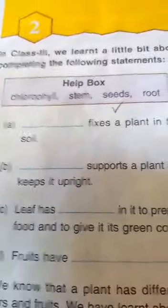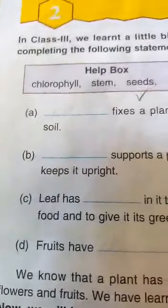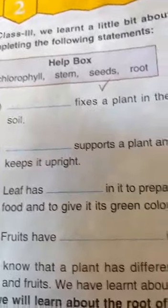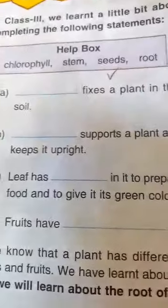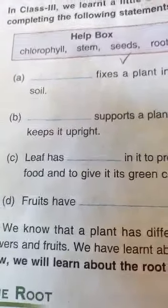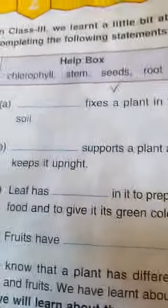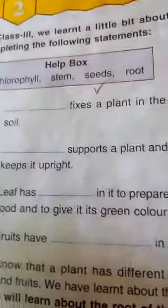Now you can answer these questions too. What fixes a plant in the soil? — the Root. What supports a plant and keeps it upright? — the Stem. What does the leaf have in it to prepare food and give it its green color? — Chlorophyll. What do roots have in them which germinate to form plants? — Seeds.